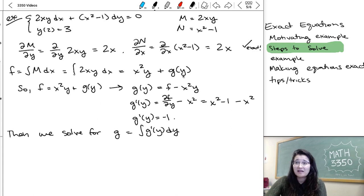This whole aside started because I had this g and I didn't know what it was. So, now that I know what g prime is, I'm going to integrate it to try to get g again. So, it's the integral of minus 1 dy, which is just minus y.